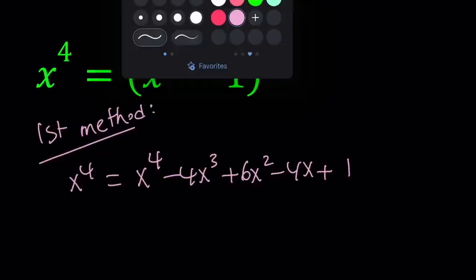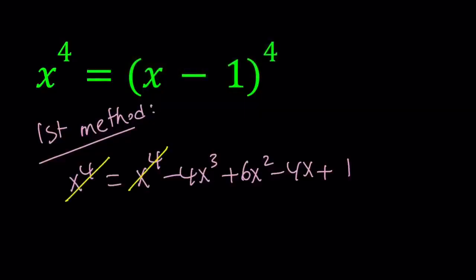So we have the following and x to the fourth nicely cancels out. Let's go ahead and do that. x to the fourth cancels out. Let's put everything on the left hand side so everything is positive.